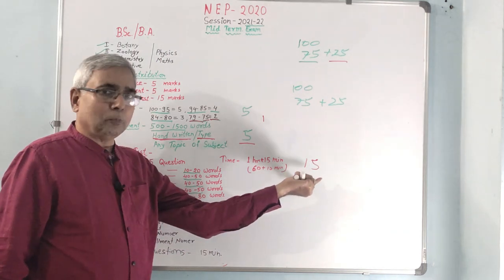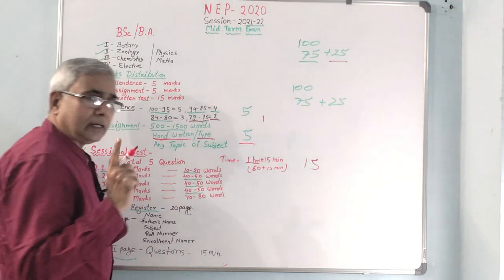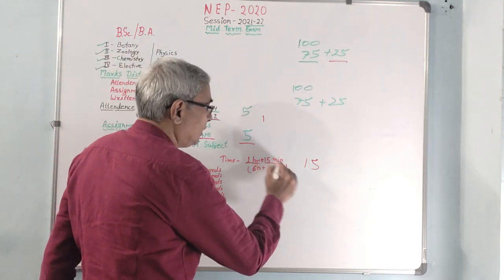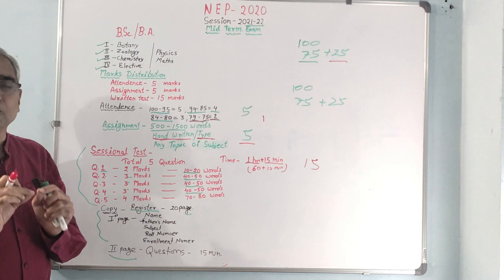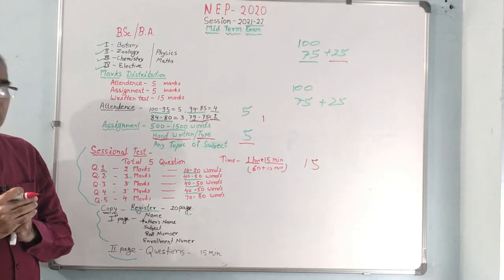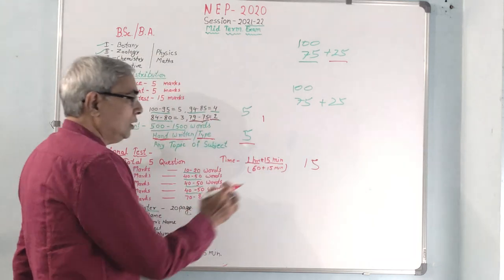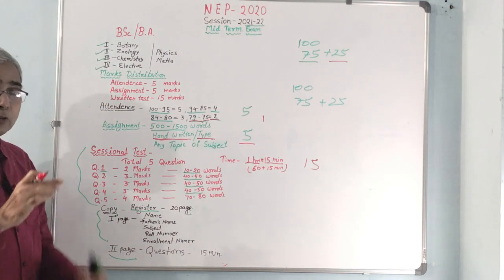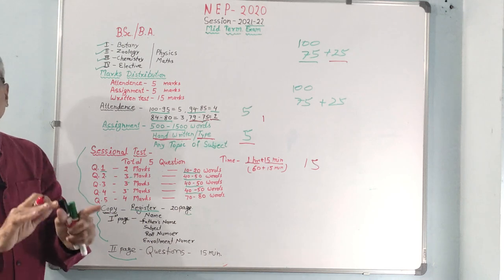For the 15-mark mid-term examination, the time allotted is one hour — 60 minutes to write answers. Additionally, 15 minutes will be given to write the questions from the board onto your copy and understand them. So in total the examination will be 75 minutes. You will write answers in 60 minutes and copy the questions in 15 minutes. A question paper will not be given to you — the questions will be written on the board and you have to write those questions in your copy.